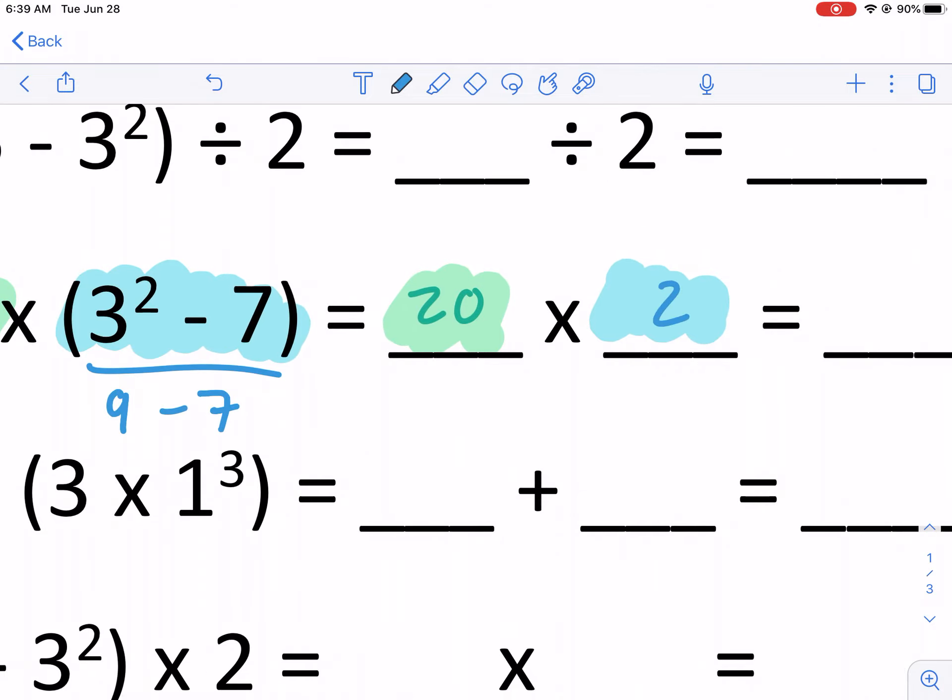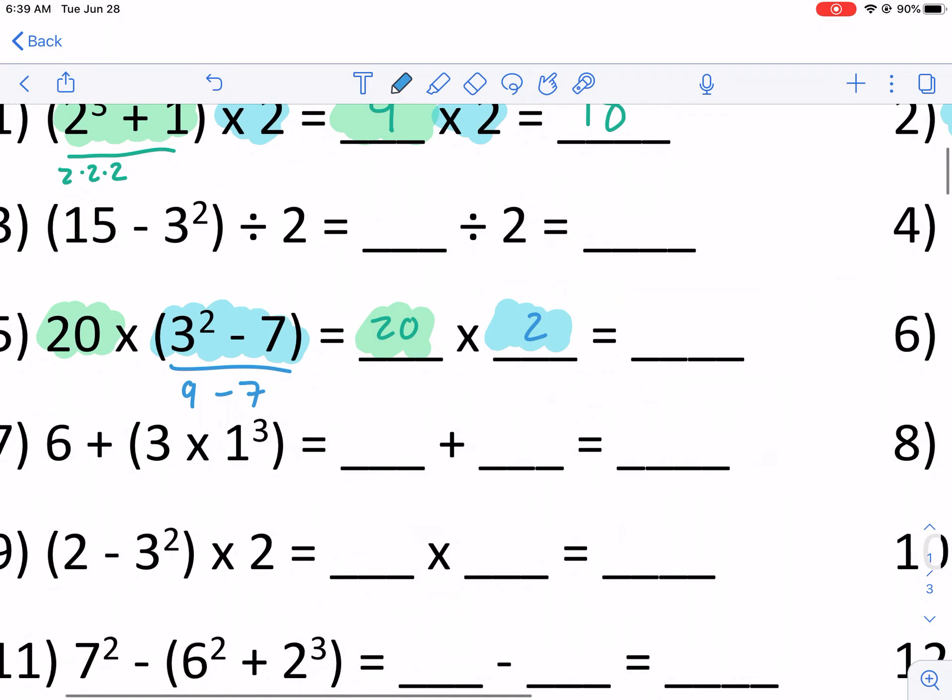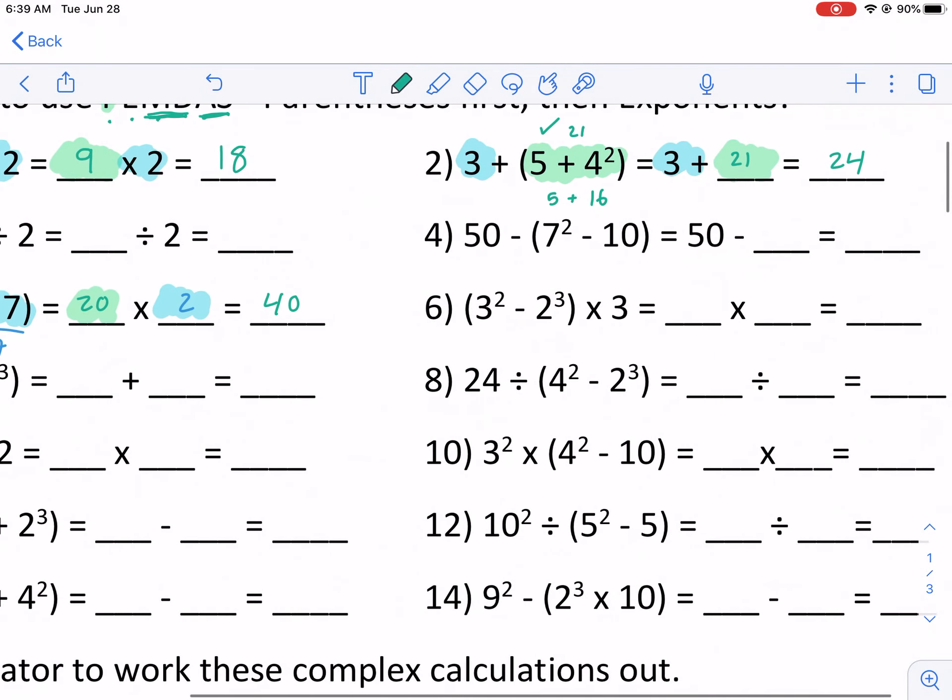I get nine, exponents first, minus seven. That's going to be two. So I put that there, 20 times two. That is, I'm doing a lots of different colors here. That's going to give me 40 as my answer.